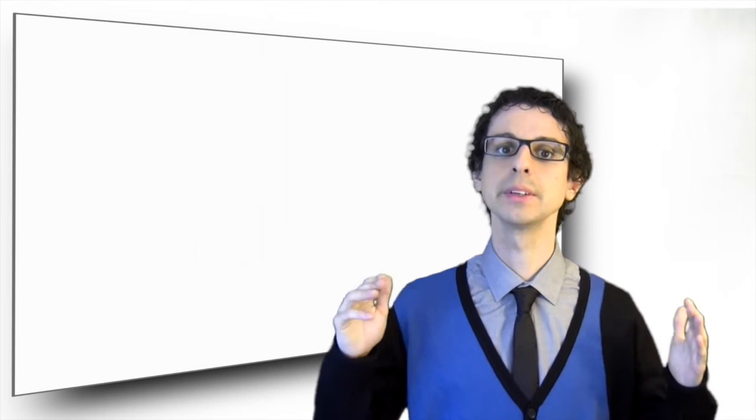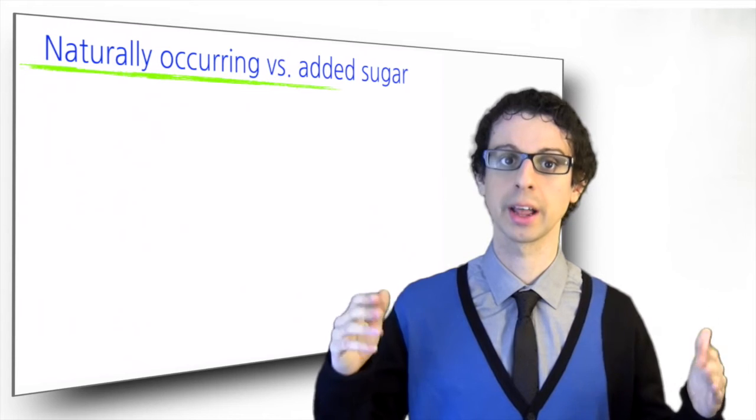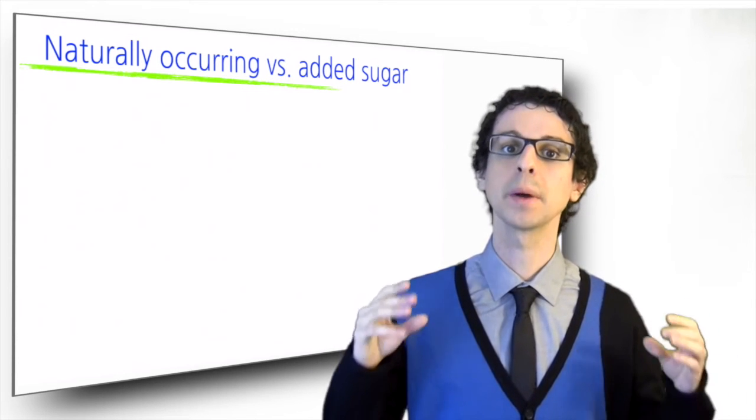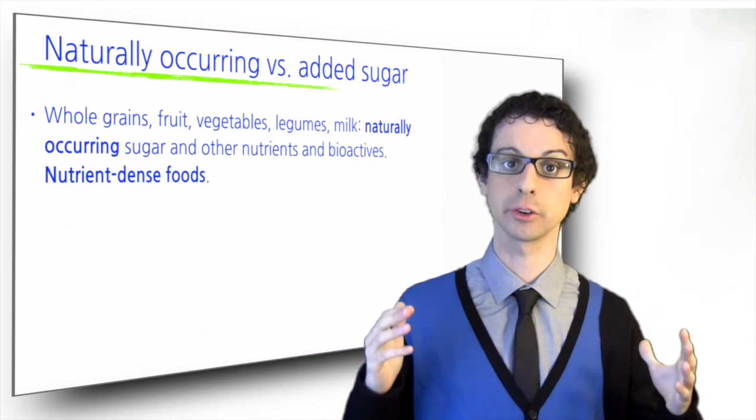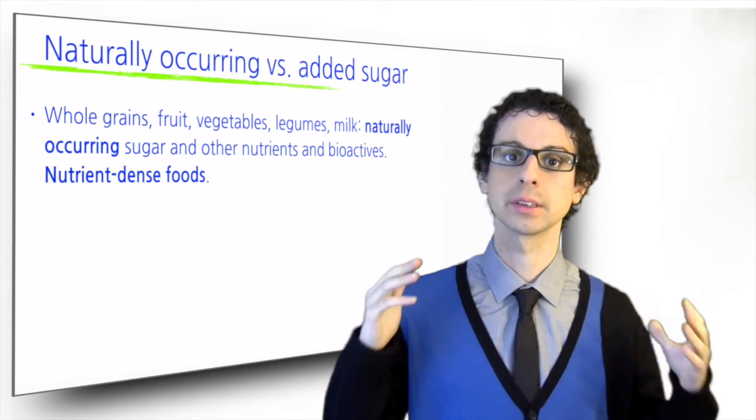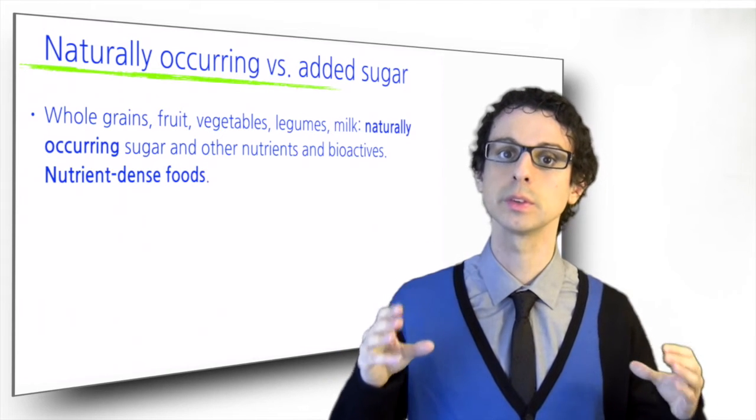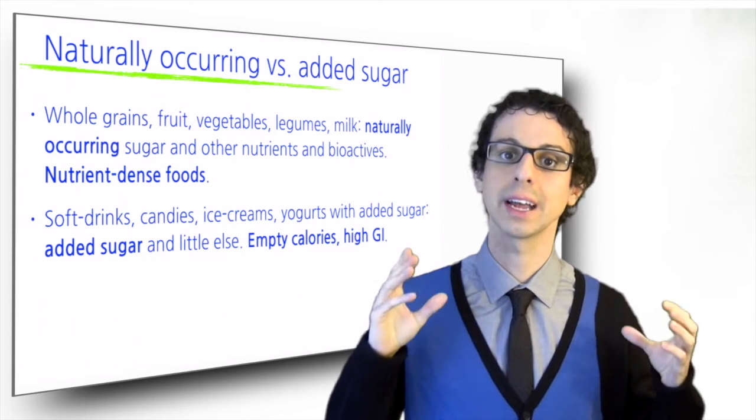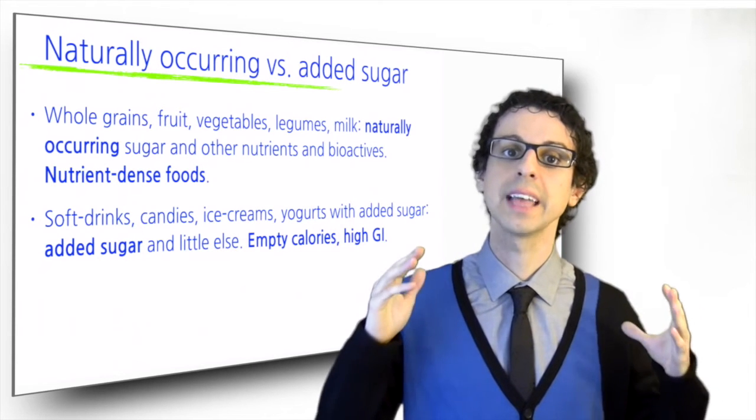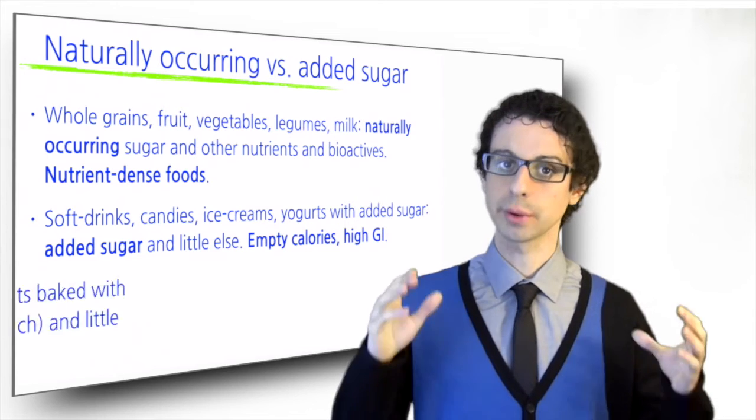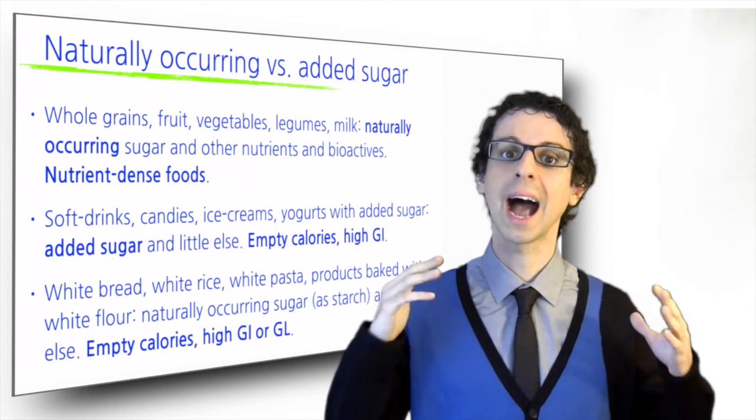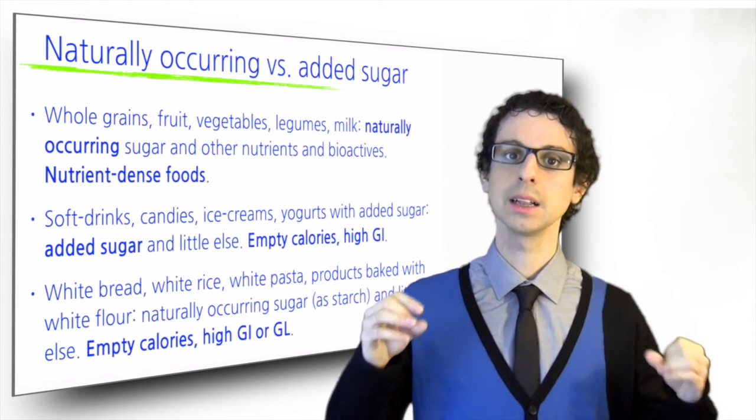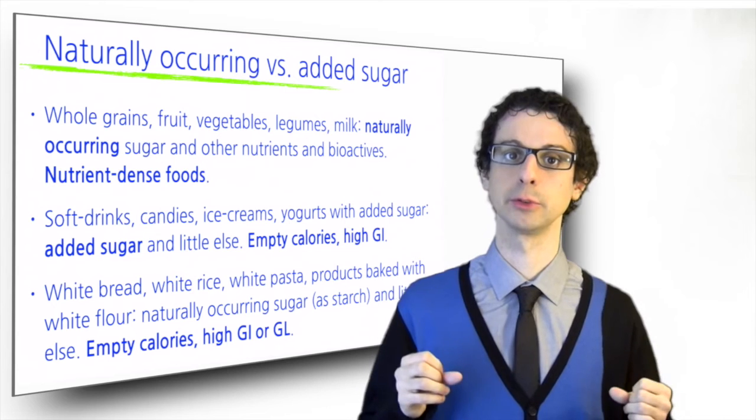Keep in mind that there is a big difference between naturally occurring sugar and added sugar. The sugar in itself is the same, but while fruits or whole grains are packed with other nutrients, vitamins, minerals and bioactive compounds that make them nutrient-dense foods, most added sugar products, such as soft drinks or candies, have sugar and little else. So they are basically empty calories. As we already learned, refined grains mostly provide highly digestible starch, so they too are sugar and little else.